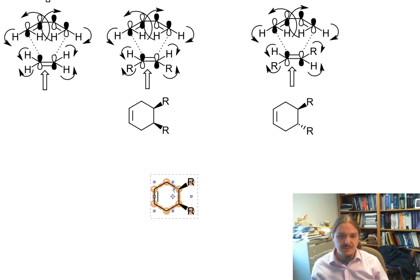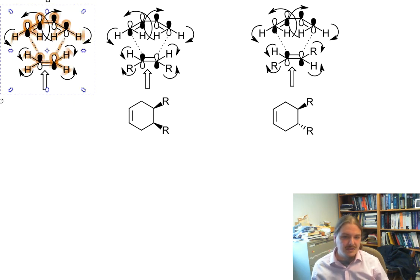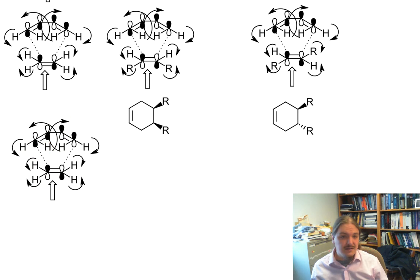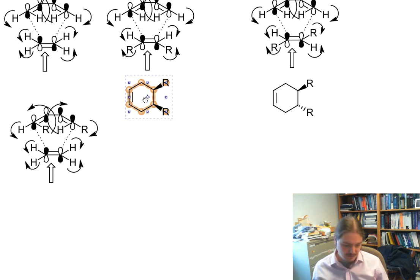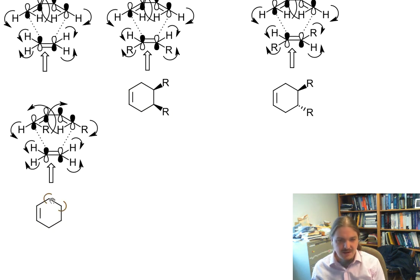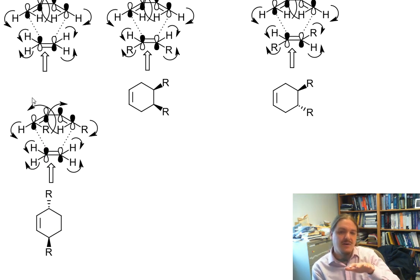Likewise, if I pop in some alkyl groups in my diene—let's have one in the middle and one on the outside—those R groups are on these two carbon atoms, and one would be down and one would be up. Then again, you would get the enantiomer of this if the dienophile approached from the top.